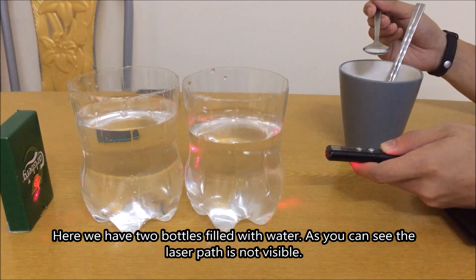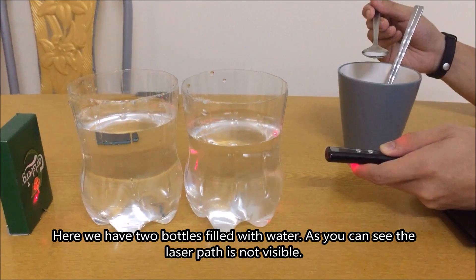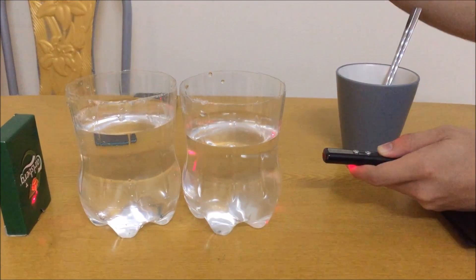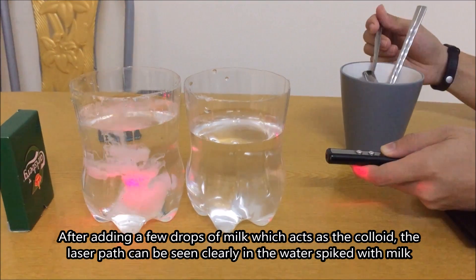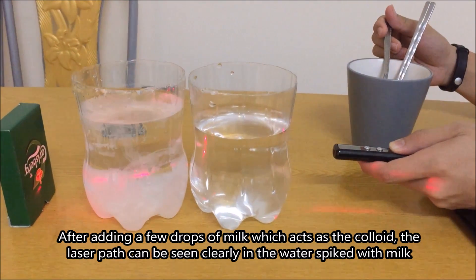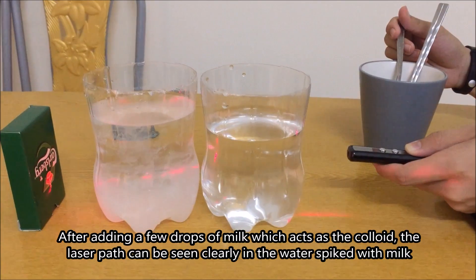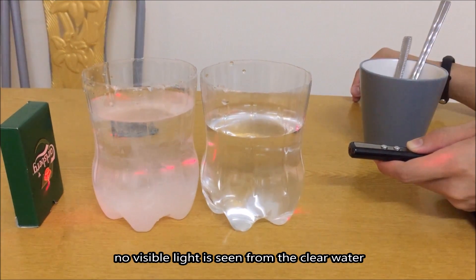Here we have two bottles full of water. As you can see, the laser path is not visible. But after you add in a few drops of milk, which acts as the colloid, the path can be seen clearly in the water bottle spiked with milk, while no visible light is seen from the clear water.